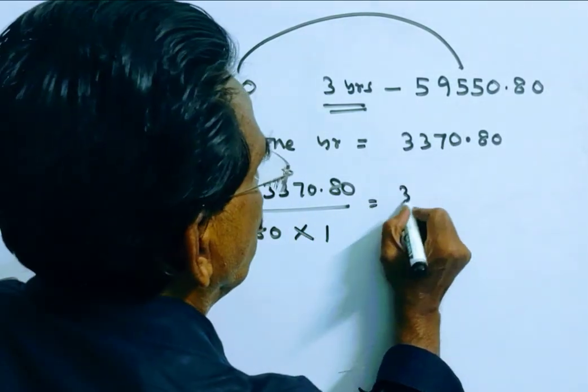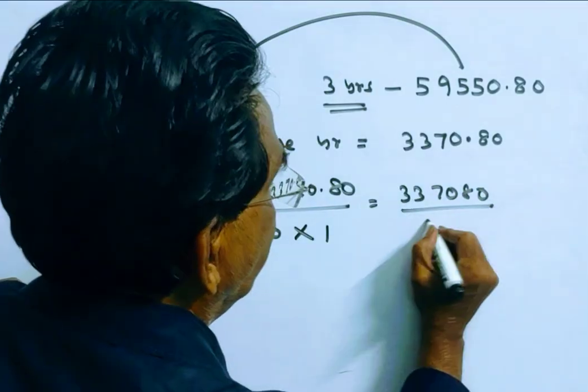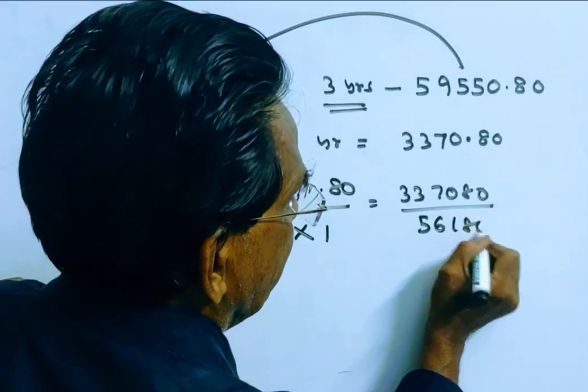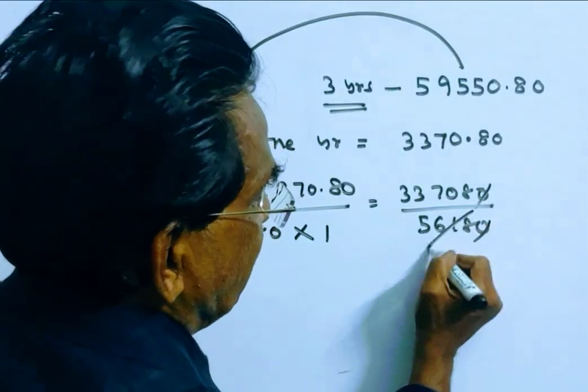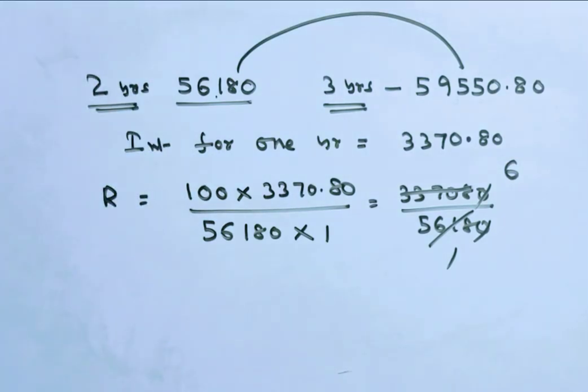Friends, this is equal to 33,780 over 56,180. 0,0 cancelled. Friends, 56,180 in succession. So, R is equal to 6% friends.